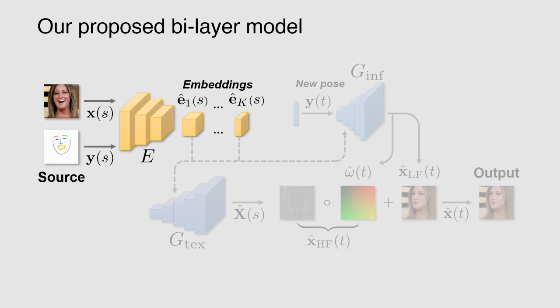One of our main contributions is the architecture of the decoder. We propose to split it into two parts. The first part, called the texture generator, produces a high-frequency texture which acts as an additional person-specific parameter of the system. This texture generator is a large network which is run once per avatar.